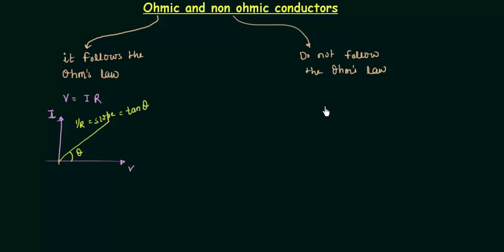What happens to non-ohmic conductors? Why don't they follow Ohm's law? On increasing the voltage, the temperature increases, and because of the increase in temperature, the resistivity rho increases, and hence the resistance increases.